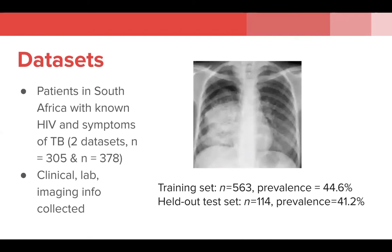The data we used were from two pre-existing datasets collected as part of two clinical studies on HIV-TB co-infection in South Africa. They consisted of 305 and 378 patients respectively, with a known diagnosis of HIV, who presented to two different hospitals in South Africa with symptoms concerning for TB co-infection. Clinical, lab, and imaging information were collected along with the results of TB diagnostic studies. These datasets were combined and randomly split into a training set of 563 and a test set of 114 patients. The prevalence of TB diagnosis was slightly over 40% in both training and testing datasets, based on culture or expert gene assay results.